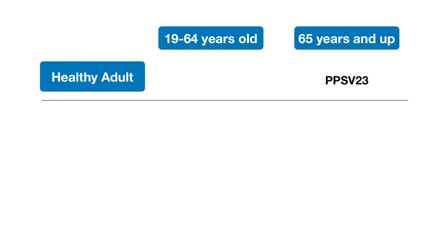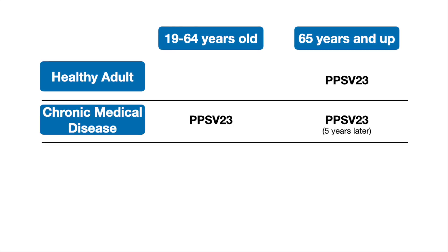For a healthy adult without any risk factors, the only recommendation was PPSV23 or Pneumovax at 65 years of age. For a patient with any chronic medical disease, the recommendation was Pneumovax between 19 to 64 years old, and then a second Pneumovax at 65 and up, with the two doses at least five years apart.